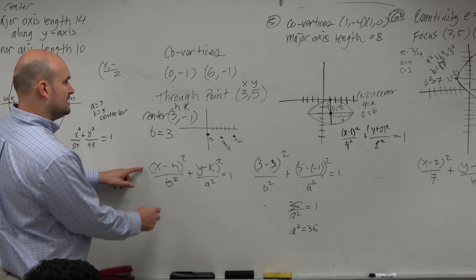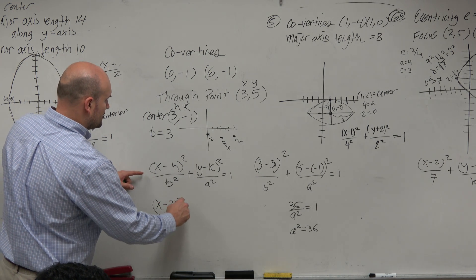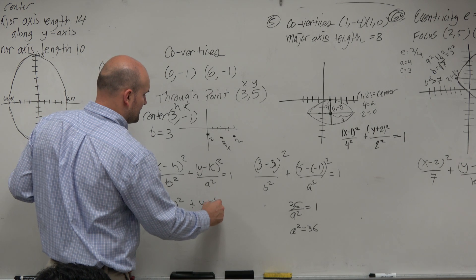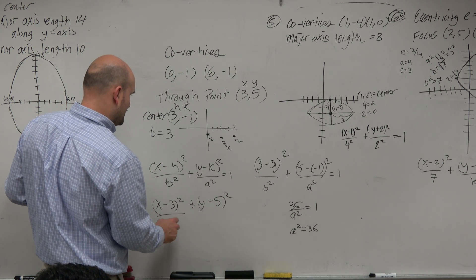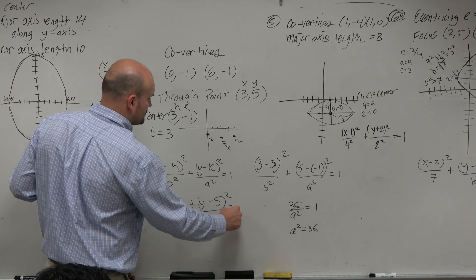So now, I can just plug in the information into my graph. (x - 3)² over 9 plus (y + 1)² over 36 equals 1.